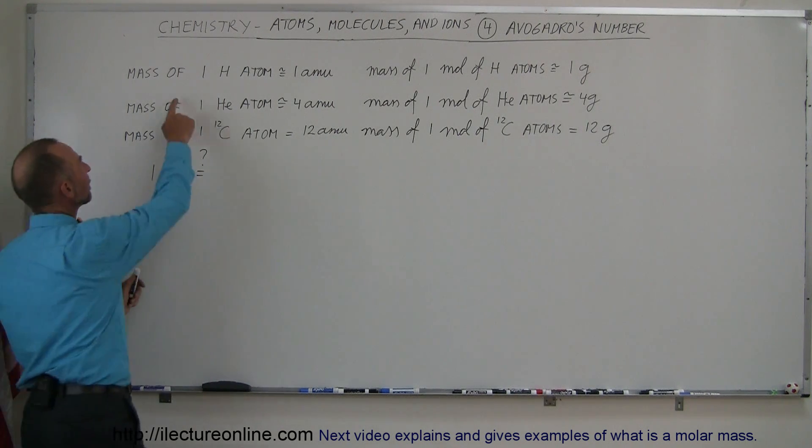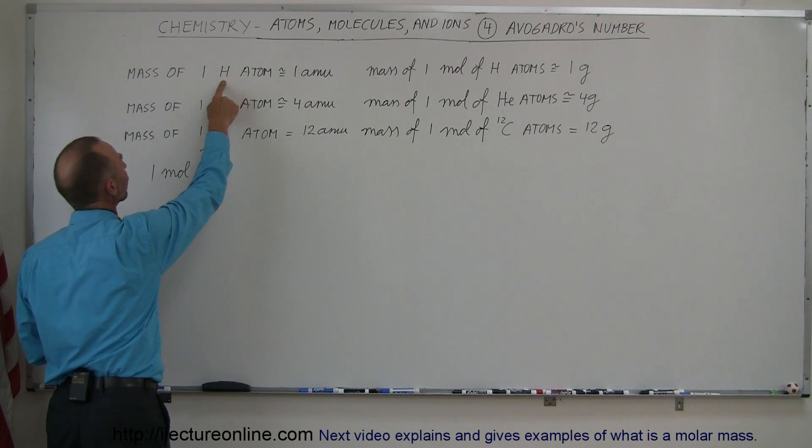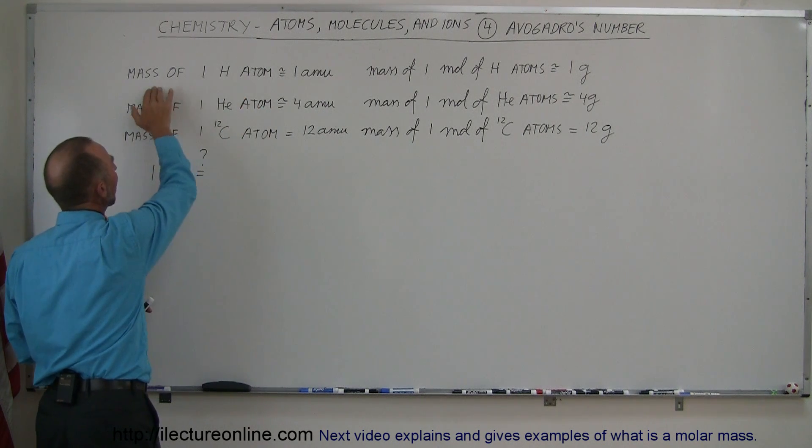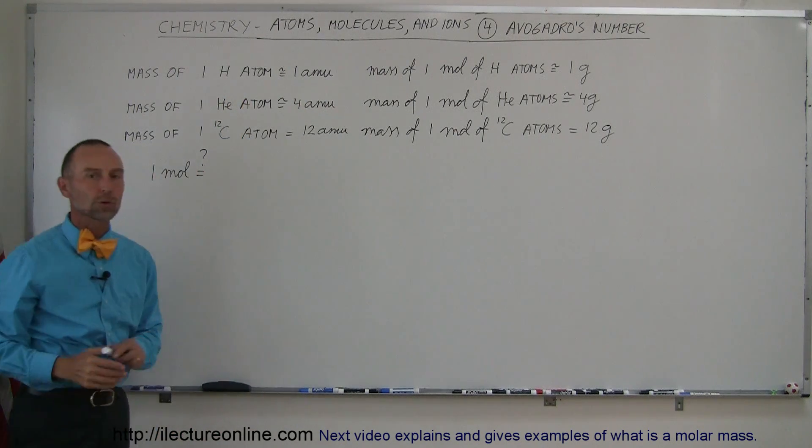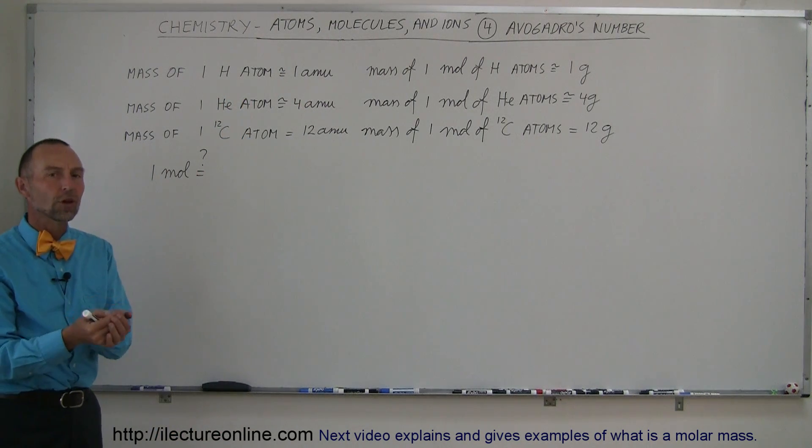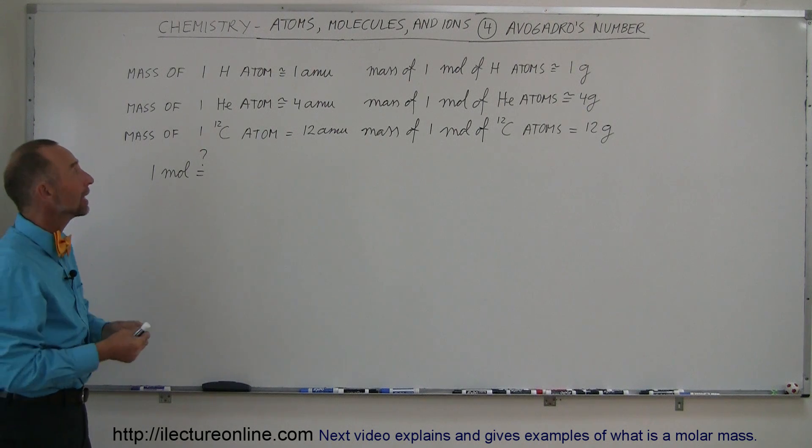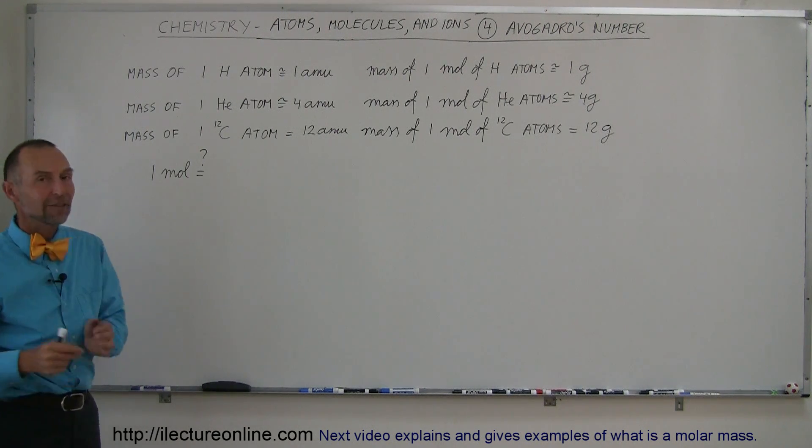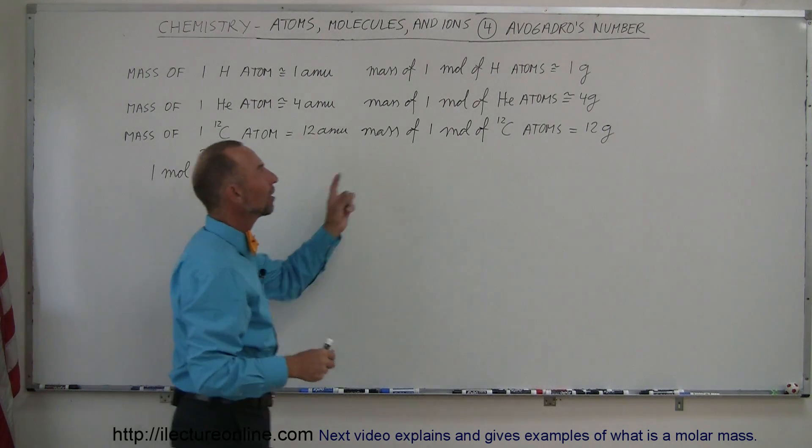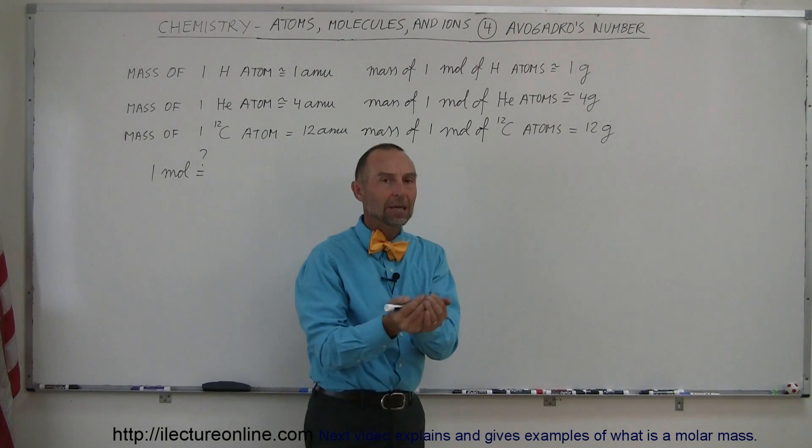Let's say we have a single atom of hydrogen. What is the mass of that? The mass of a single hydrogen atom is approximately equal to one AMU. That's actually the unit we use to measure the mass of a single atom. In the case of a hydrogen atom, it would be pretty close to an AMU. Now if you had a whole mole of hydrogen atoms, the mass would be one gram.